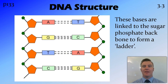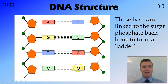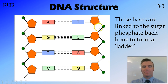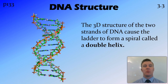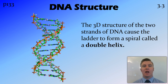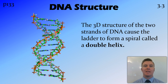Once these bases are linked together, they form the rungs on a ladder, with our bases — A, T, G, C — and the ribose-phosphate backbone forming the sides. On a 3D level, these strands of DNA actually twist around, forming a spiral called a double helix. So if the two-dimensional structure is a ladder, the three-dimensional structure would be a spiral staircase.